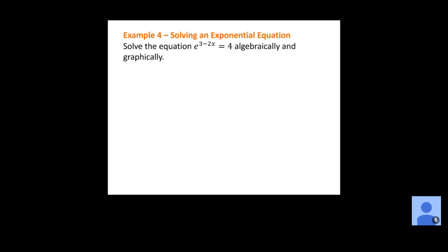We want to solve e to the 3 minus 2x equals 4. This time the base of e is already by itself with no coefficient, so I can take the natural log of both sides as my first step: natural log of e to the 3 minus 2x equals natural log of 4. The natural log of e to some exponent equals that exponent, so on the left we get 3 minus 2x equals the natural log of 4. Now subtract 3: negative 2x equals natural log of 4 minus 3. Divide by negative 2, giving x equals natural log of 4 minus 3, all over negative 2.